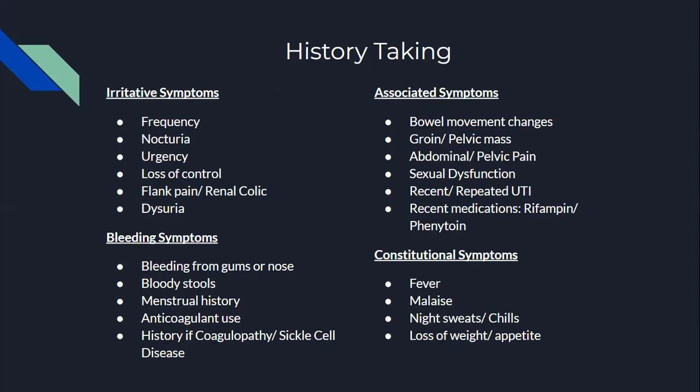Look for irritative symptoms. Ask how often it happens. Does the patient urinate during the nighttime — do they wake up to pee? Do they have a sense of urgency to urinate? Do they have loss of control with Valsalva maneuvers — for example, with coughing, sneezing, or bending over, does the patient void involuntarily? Does the patient experience any flank pain? Patients may say they have pain in their mid to lower back. Does the patient experience dysuria — pain with urination?